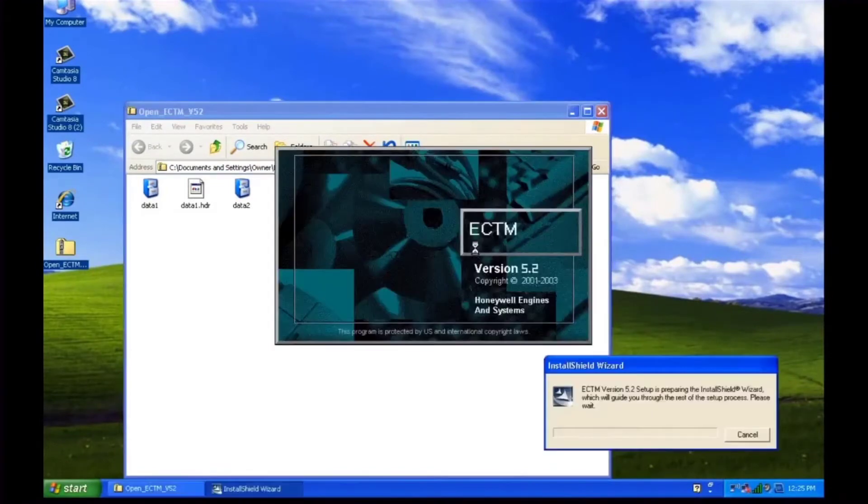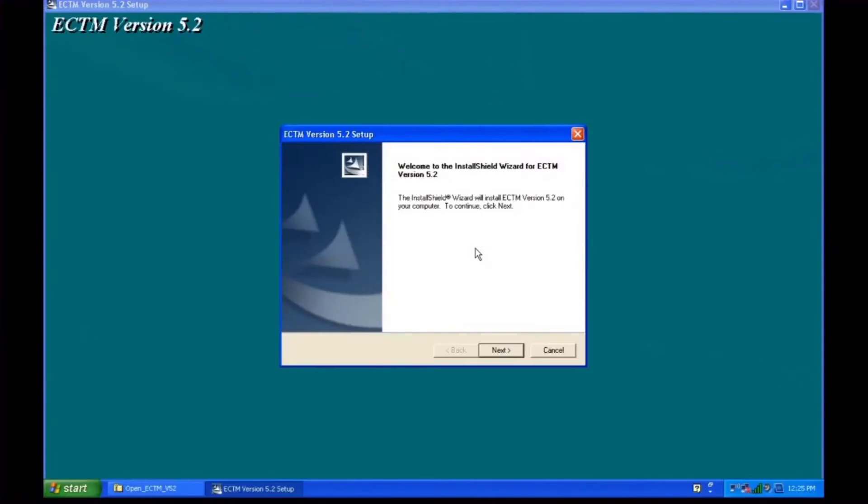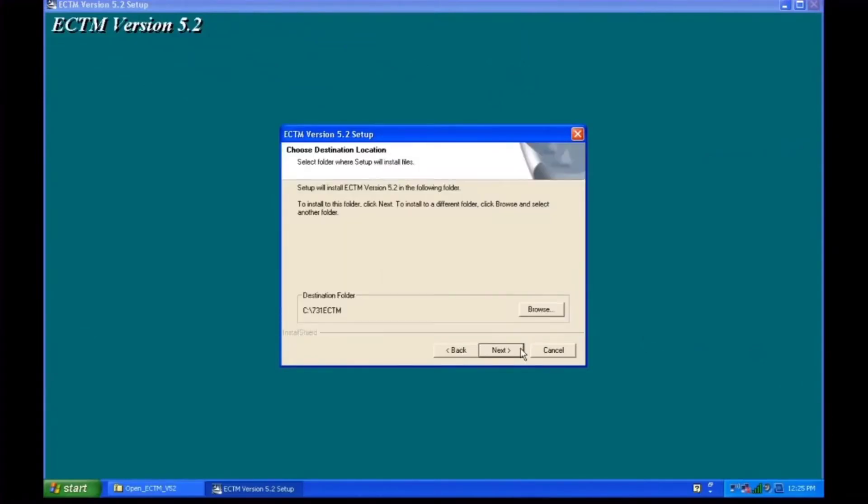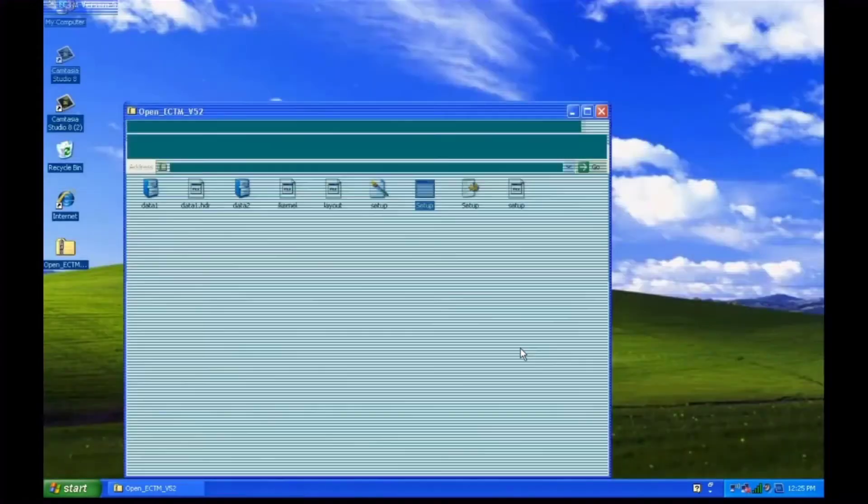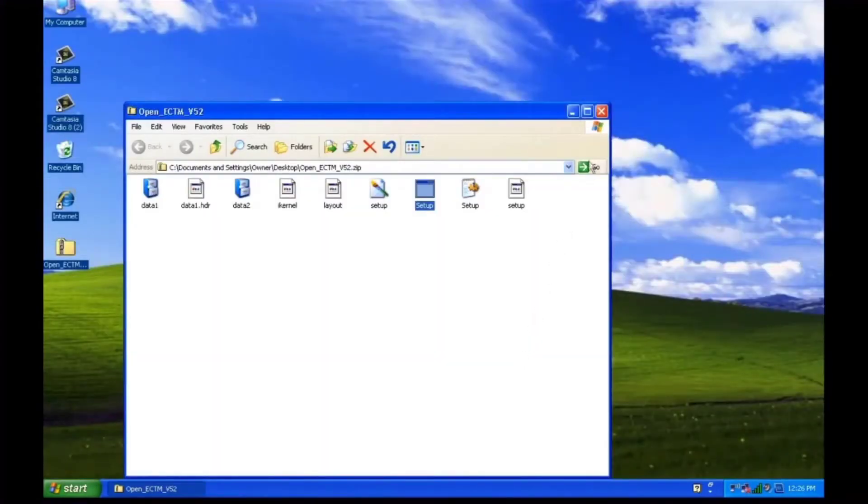The ECTM software defaults to the C drive. We recommend that you don't change the destination folder. Go through the prompts and install the software. Finish the install and restart your computer.